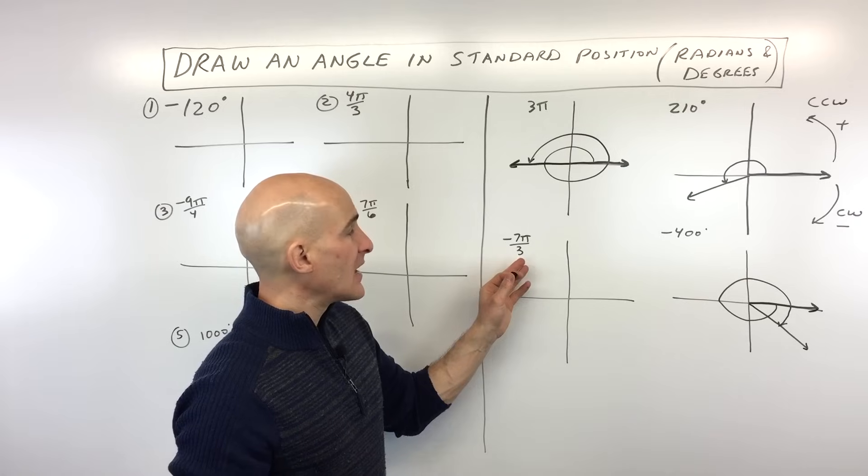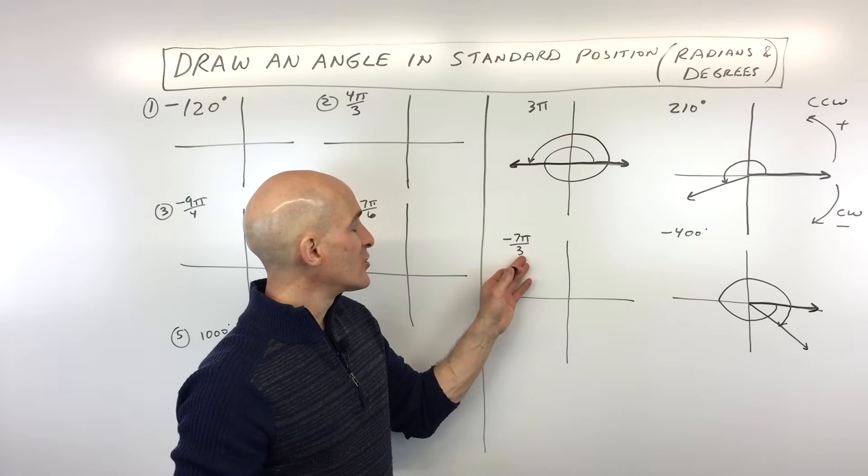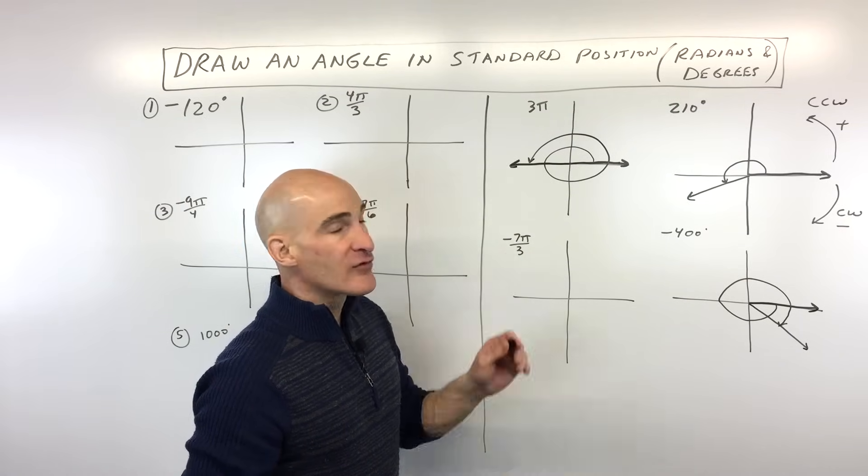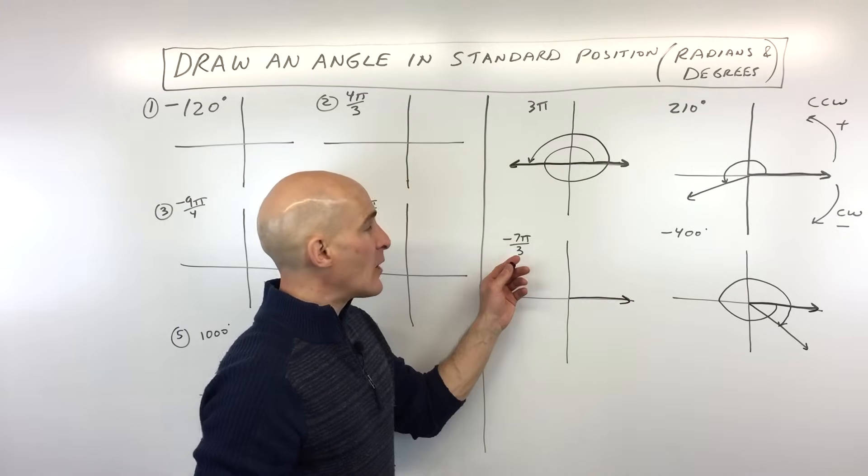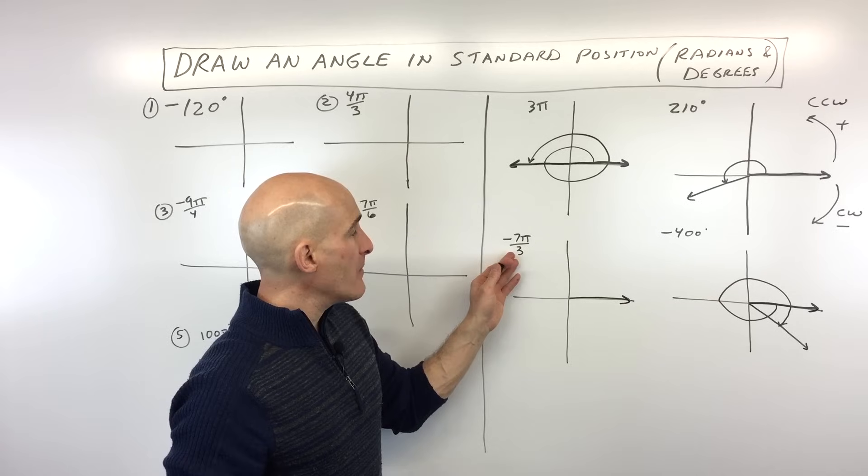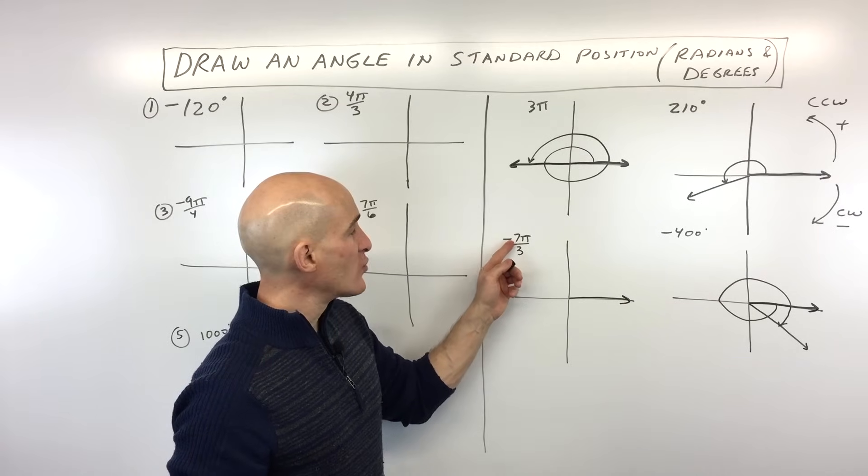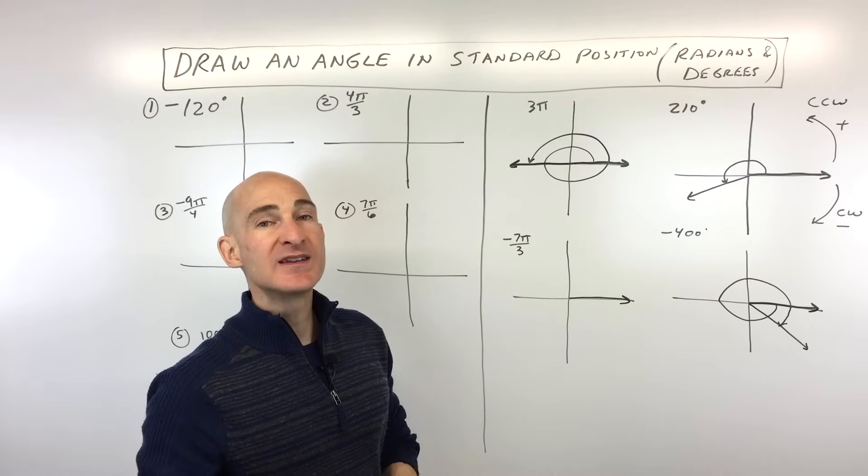So let's go to one more example, an introductory example. Then we're going to get into some ones that you can practice. Negative 7 pi over 3. So what you want to do here is you want to face that positive x-axis direction. And what I like to do when it's an improper fraction like this, where the numerator is larger than the denominator, is to write it as a mixed number.